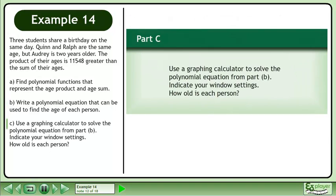In Part C, use a graphing calculator to solve the polynomial equation from Part B. Indicate your window settings. How old is each person?